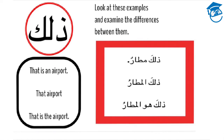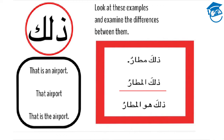Let's examine these examples grammatically. In the first example, valika mataron, we have a full sentence. It begins with valika, the ism el-ishara, meaning that, and a singular indefinite masculine noun ending with nunation. Valika mataron means that is an airport. In the second example, valika al mataron — valika is the ism el-ishara meaning that, followed by a definite masculine singular noun, el-mataru. It only contains one vowel marker at the end because it is definite. It's no longer a sentence, but merely a phrase. Valika al mataron means that airport.